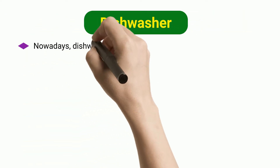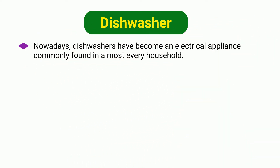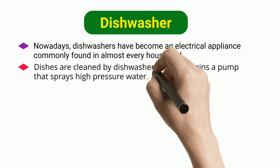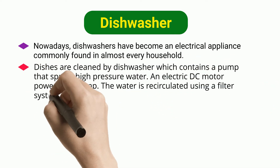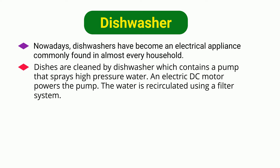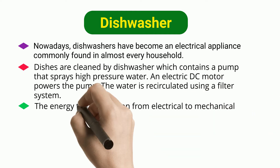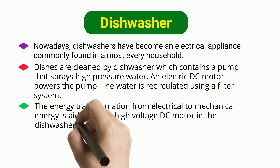Dishwasher. Nowadays, dishwashers have become an electrical appliance commonly found in almost every household. Dishes are cleaned by a dishwasher which contains a pump that sprays high-pressure water. An electric DC motor powers the pump. The water is recirculated using a filter system. The energy transformation from electrical to mechanical energy is aided by the high voltage DC motor in the dishwasher.